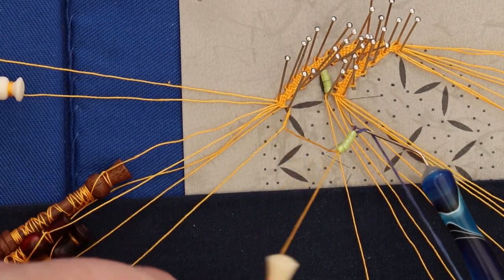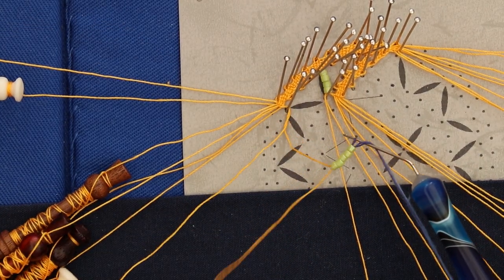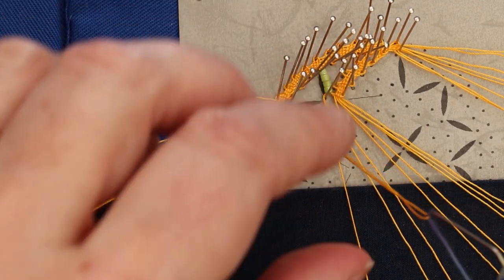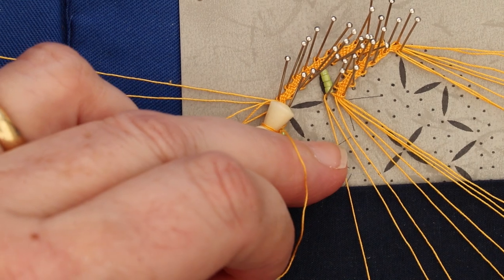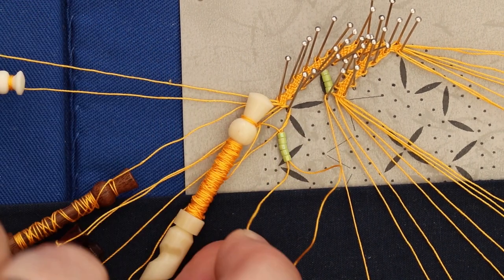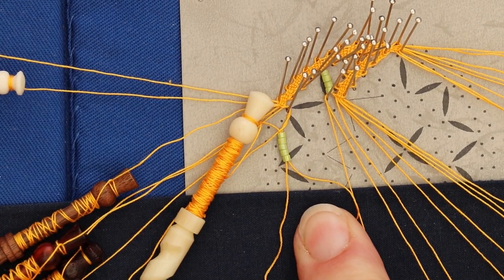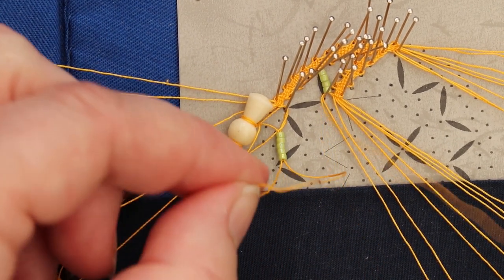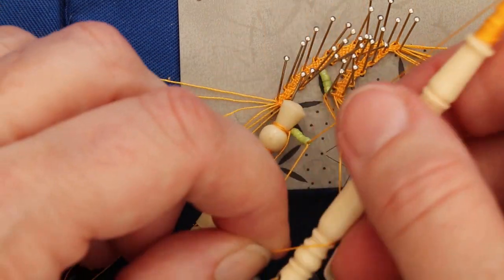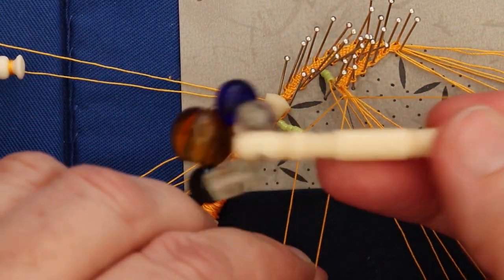Get that nice big loop. If it isn't long enough, lengthen it at this stage before you let go of the lazy susan. Get hold of the loop, take the lazy susan out, you've got the loop, you've got the beads on there.